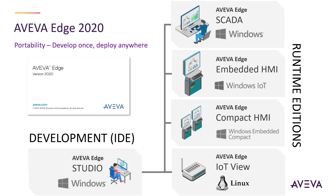Aviva Edge SCADA scales from 150 tags to pretty much unlimited. The runtime for Windows IoT is called Aviva Edge Embedded HMI, suitable for embedded industrial panels running Windows IoT or Windows Embedded 7 or 8. Aviva Edge Compact HMI runs on Windows Embedded Compact, formerly known as Windows CE, and is an extremely cost-effective solution for embedded HMIs.